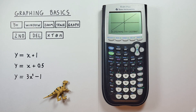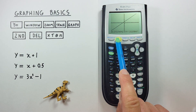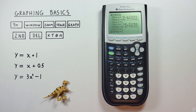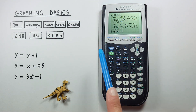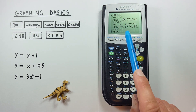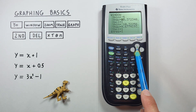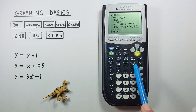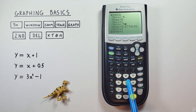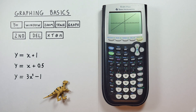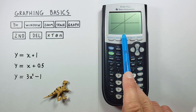We can also manually choose our zoom using the Window key. This gives us our window dimensions. Let's set our window to x and y from negative five to positive five. To do that, we set our cursor there, hit the clear button, and go negative five by five. Clear that, negative five by five. Now if we hit graph, we can see we've reset our zoom to negative and positive five.